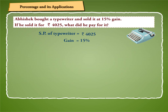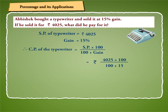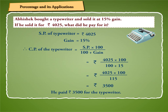Gain is equal to 15%. Therefore, CP of the typewriter is equal to SP × 100 / (100 + gain) = Rs. 4025 × 100 / (100 + 15) = Rs. 4025 × 100 / 115 = Rs. 3,500. Hence, he paid Rs. 3,500 for the typewriter.